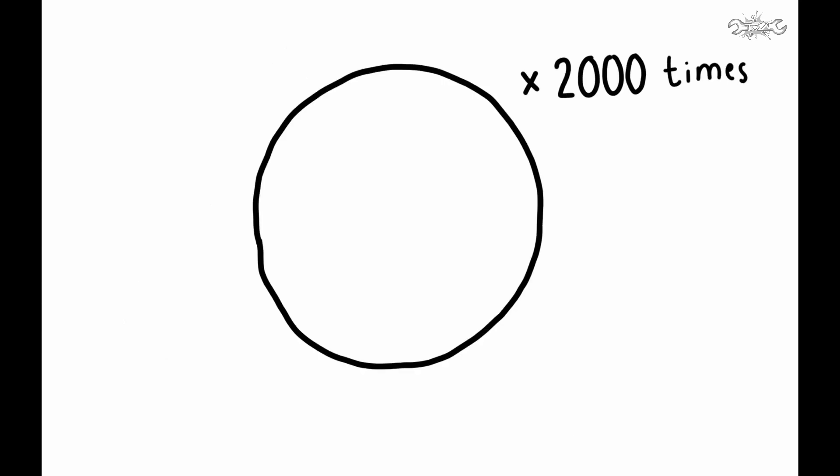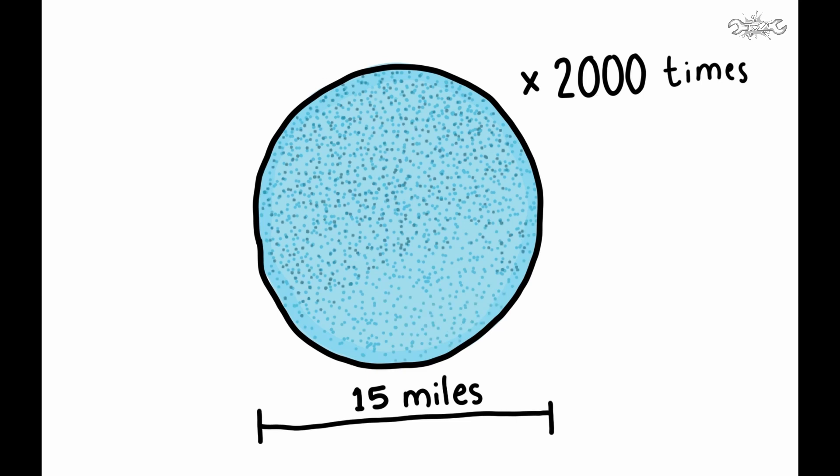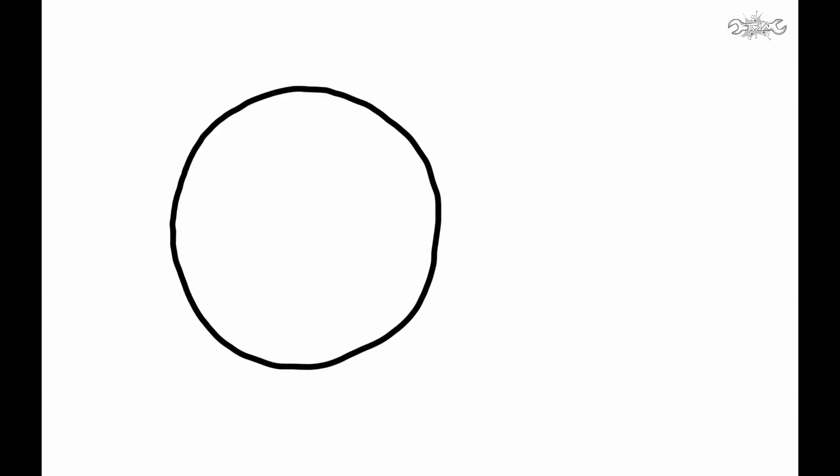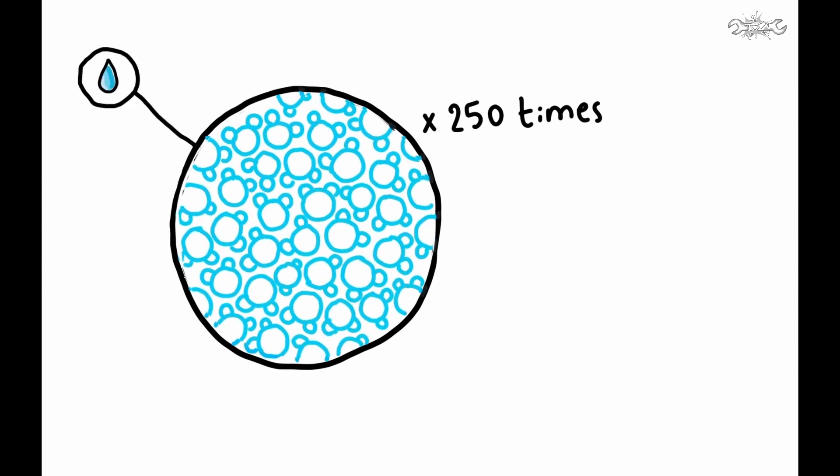Let us magnify this 2000 times more. There is now a 15 mile spread of water which no longer looks smooth. It looks more like a crowd at a football ground from a long distance. Let us magnify this for only 250 times more. This is the view of water magnified a billion times.